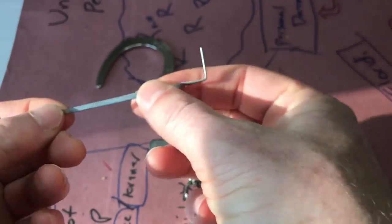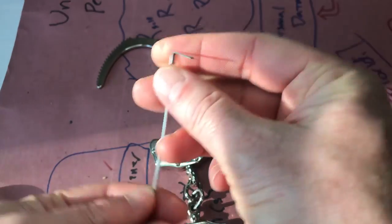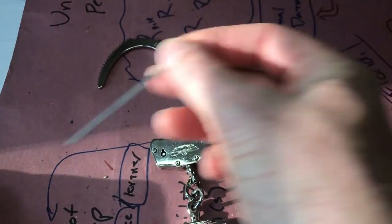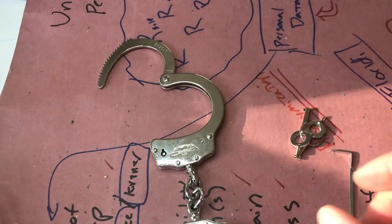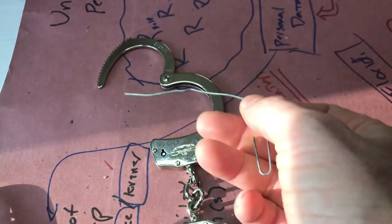All right. I'm here using a piece of a windshield wiper blade. It's actually a tension wrench for lock picking, but same thing. You could do the same thing with paper.